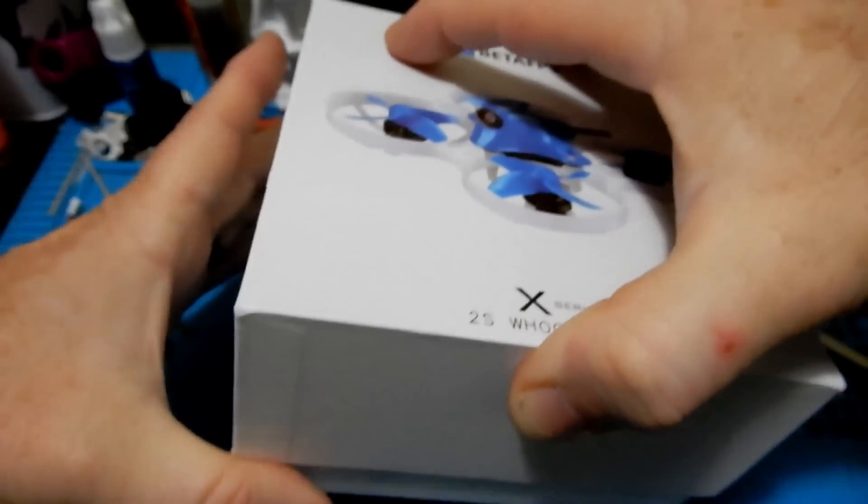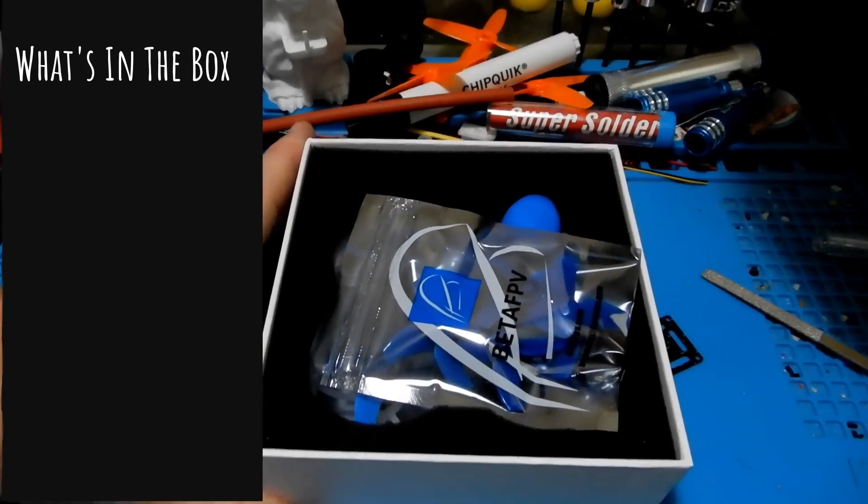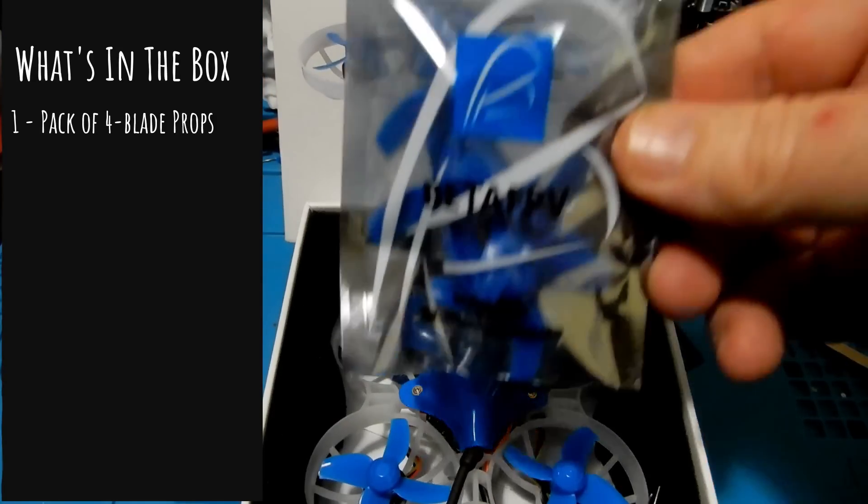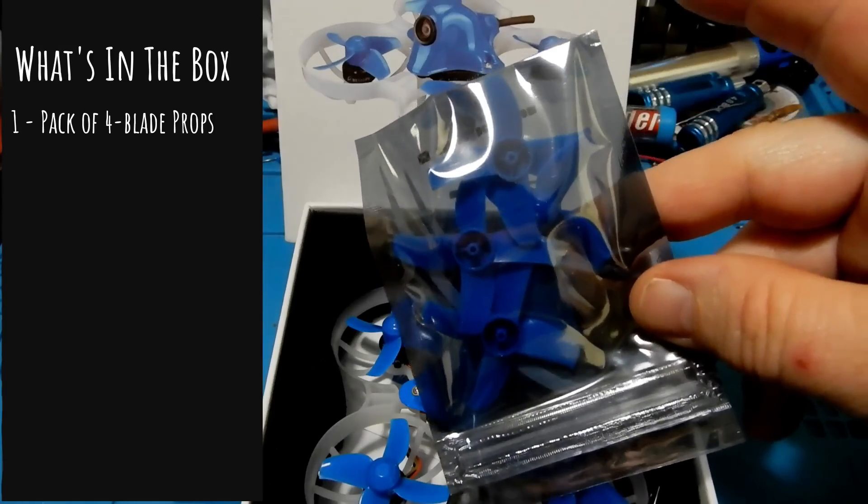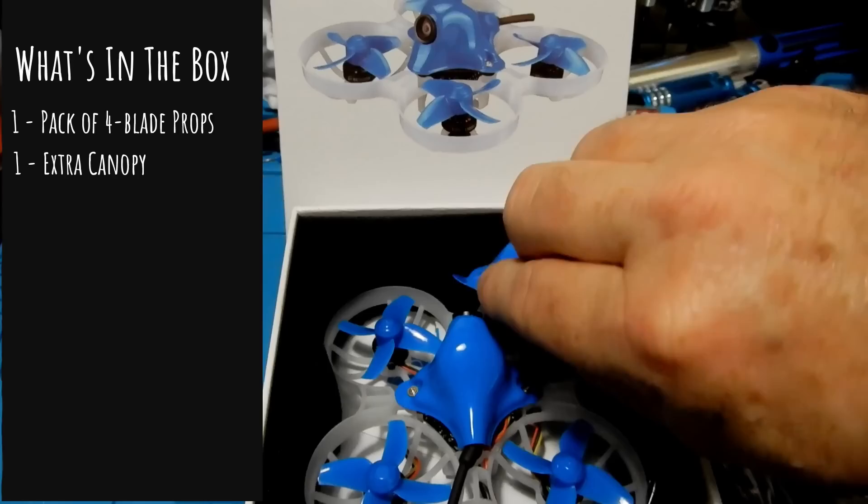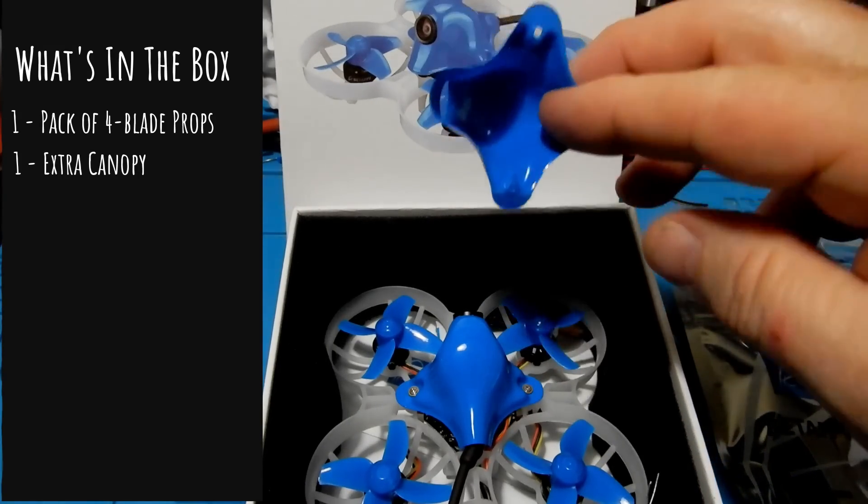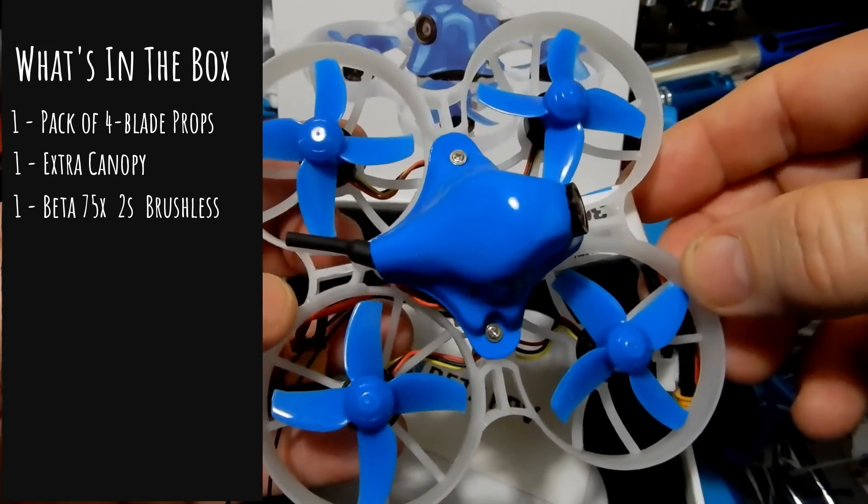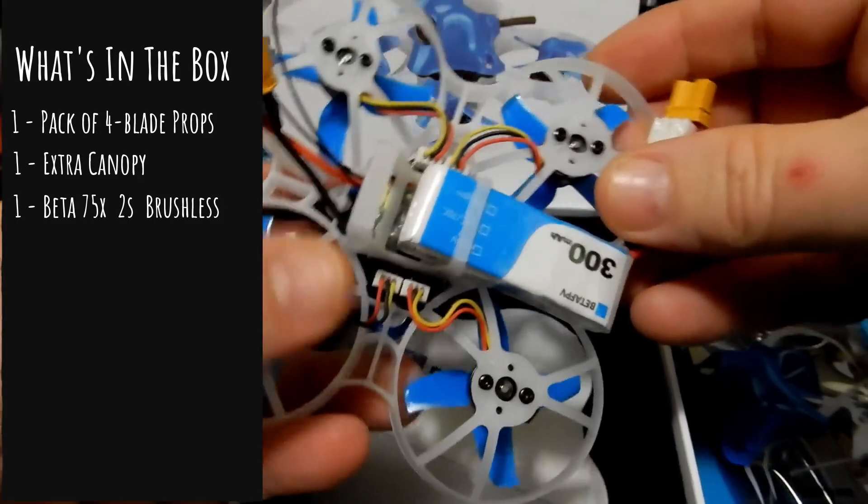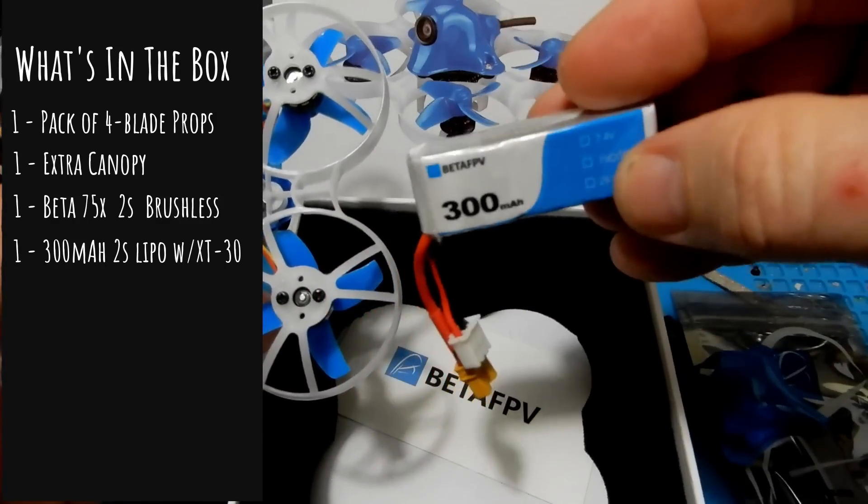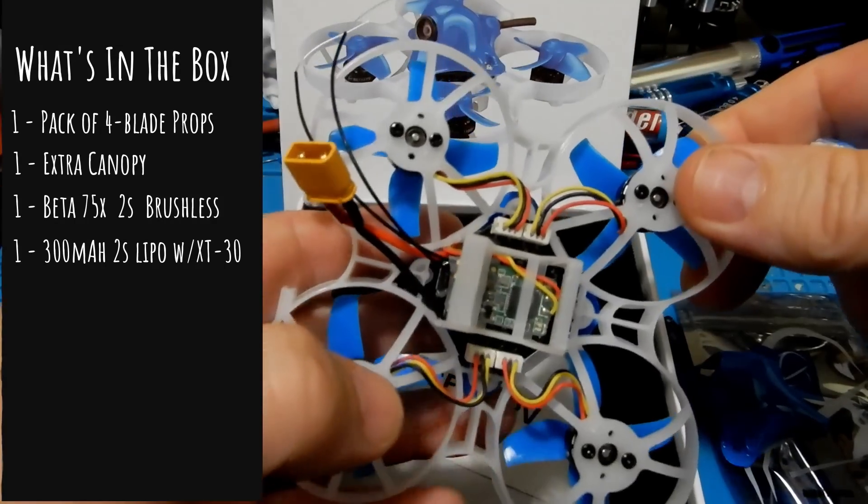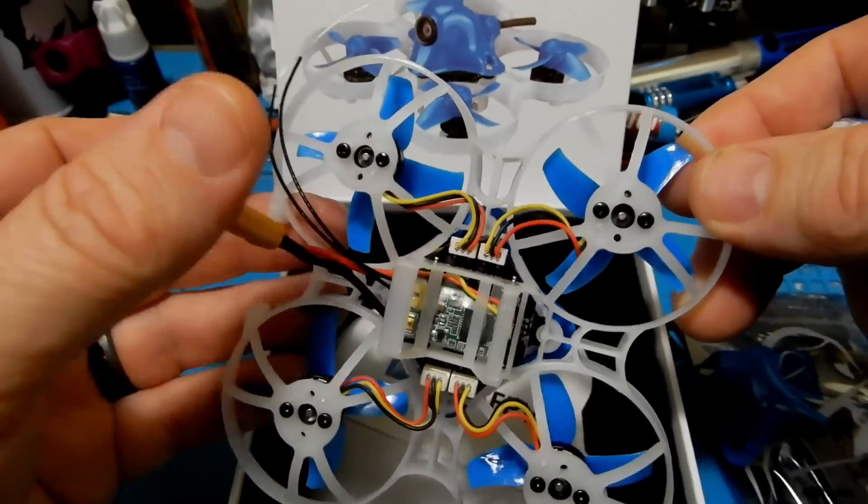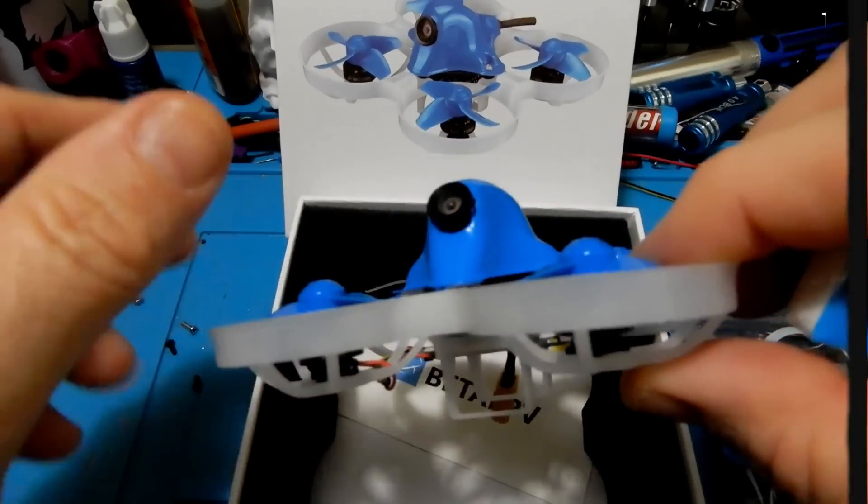The first thing we're going to see when we open the box is an extra set of props, or two sets of props if you will - two counterclockwise and two clockwise props. These are Beta FPV 40 millimeter props and having an extra set is always a good thing. Next up is the classic Beta FPV canopy, you get an extra one of those as well. Then we get the Beta FPV 75X itself and we're also getting our 300mAh 2S lipo battery. At the making of this video extras of these batteries are out of stock but you can use a Tattoo battery with an XT30 if you need to.